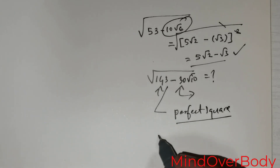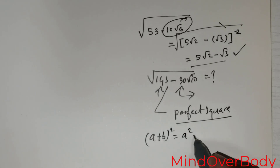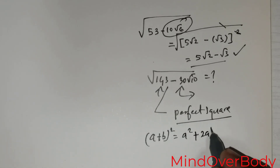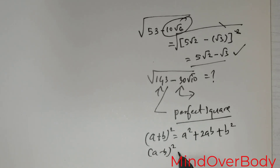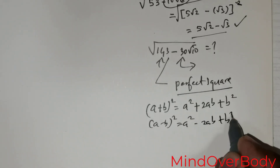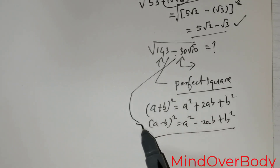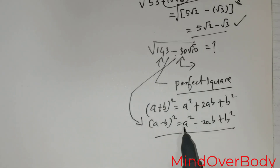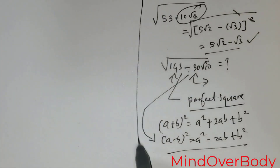There are two perfect squares we know. One is (a + b) squared, which equals a squared plus 2ab plus b squared. The other is (a minus b) squared, which equals a squared minus 2ab plus b squared. Whenever you have a negative sign, the perfect square to use is (a minus b) squared. Let me use this space.